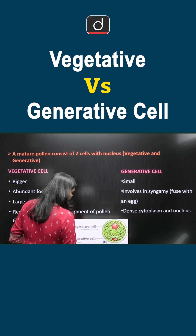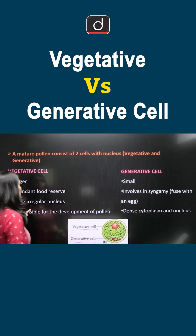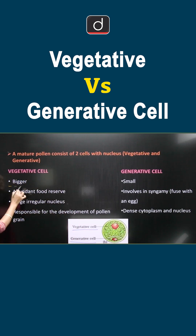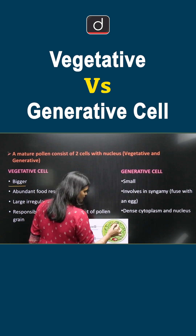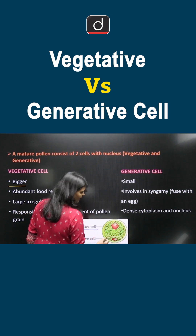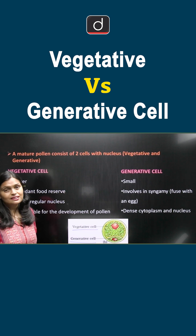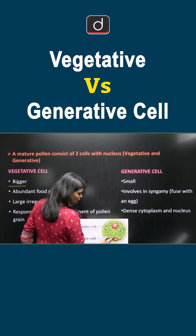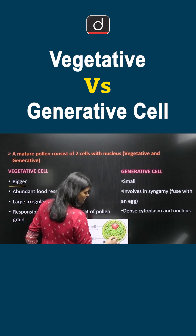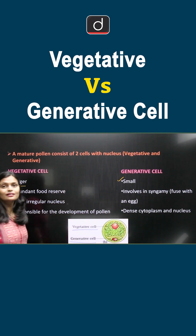Now, this vegetative cell is bigger in size — from here to here you have the vegetative cell, which is bigger in size. And only this much you have the generative cell, which is smaller in size.